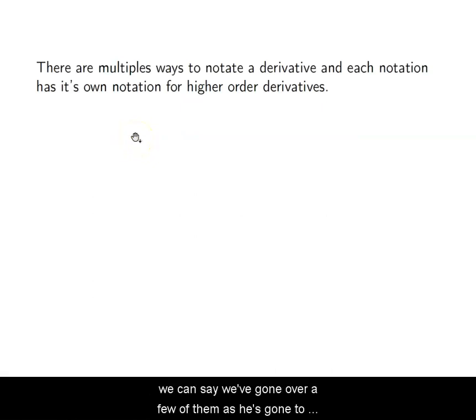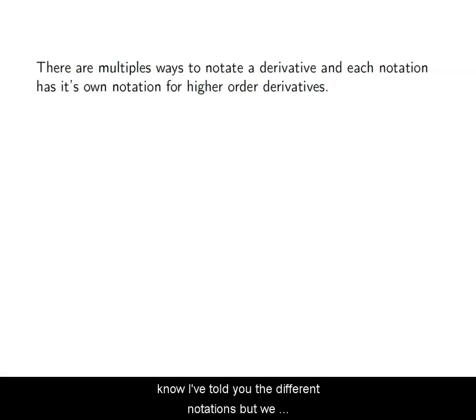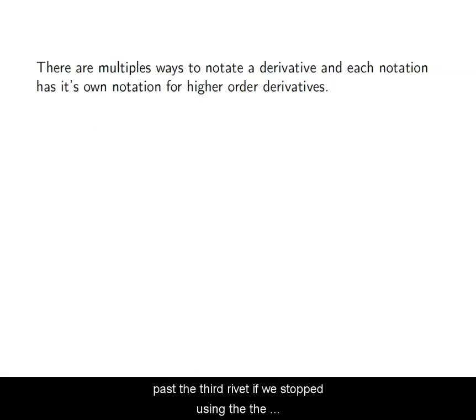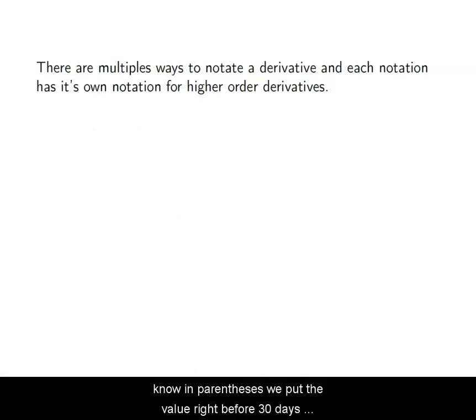Before we get into that, we're going to talk about the different notations. We've gone over a few of them as we've gone through this class — we've gone through the Leibniz notation — but we haven't really specifically gone into the notation for higher order derivatives. I did tell you that when we're using the prime notation, once we get past the third derivative, we stop using the apostrophes, the tick marks, and we just start putting the value in parentheses.